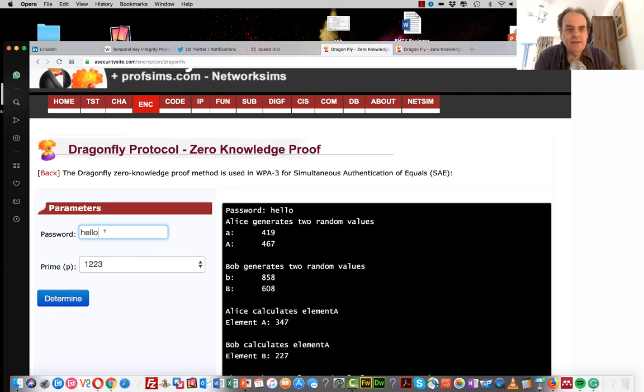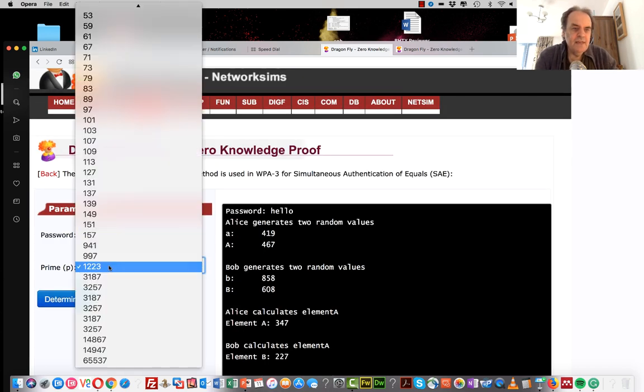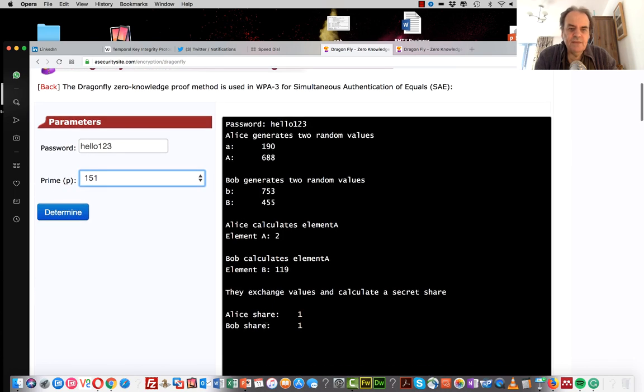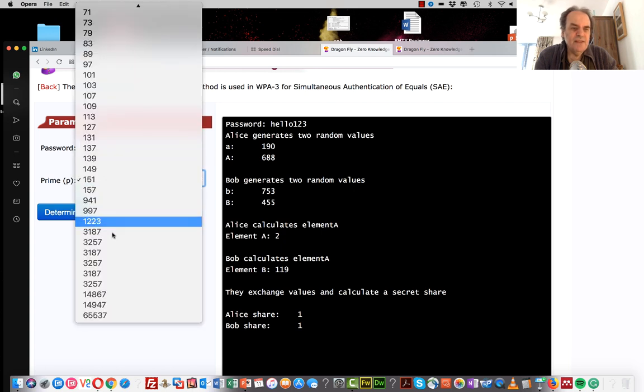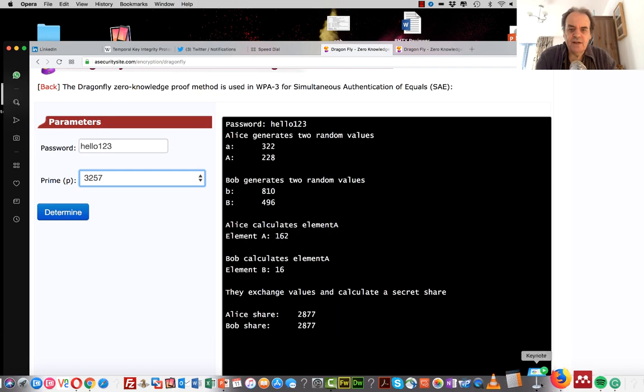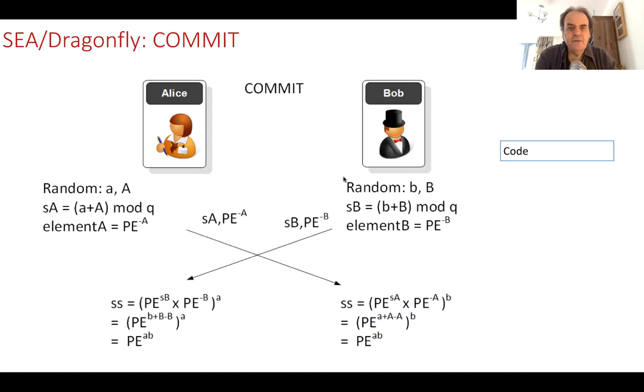Eve sitting in the middle cannot tell what the password is and what the end phrase actually is. So we can just do a quick run here. We'll try it with a low one-two-three. We'll take a prime number of 151. And fingers crossed, hopefully, we'll end up with the same shared key. It's only one in this case. I'll go for a bigger prime number. And we can see here, they both end up with the same value here. As I said, the values are likely to be much larger than that for the prime numbers.